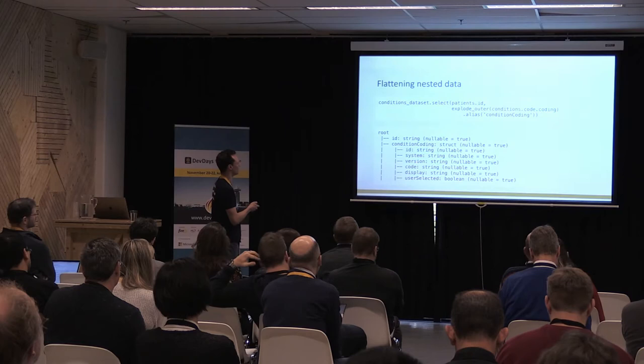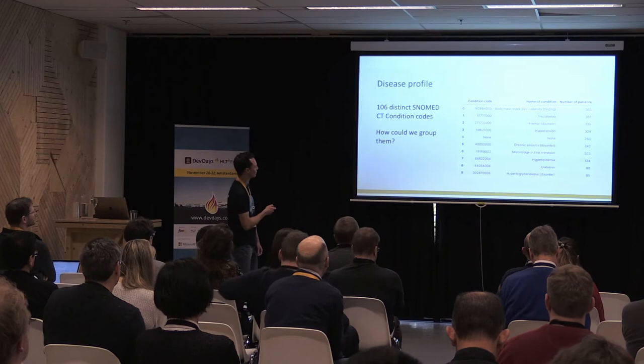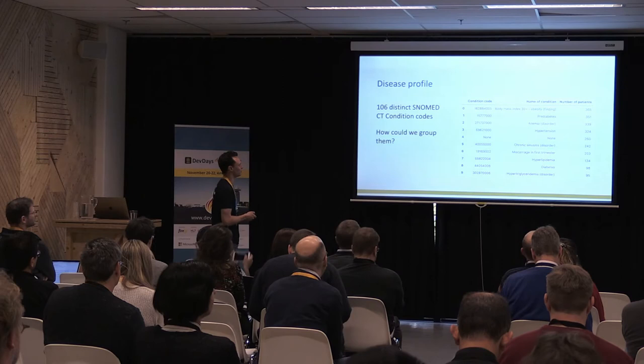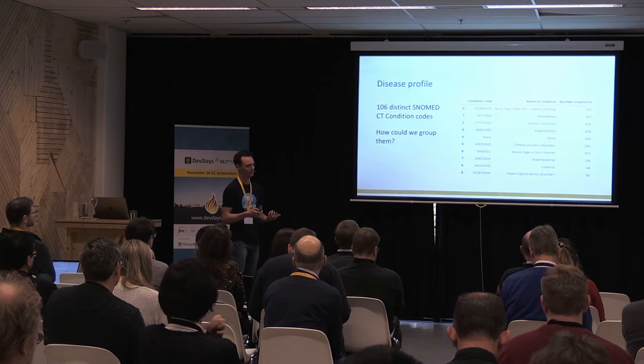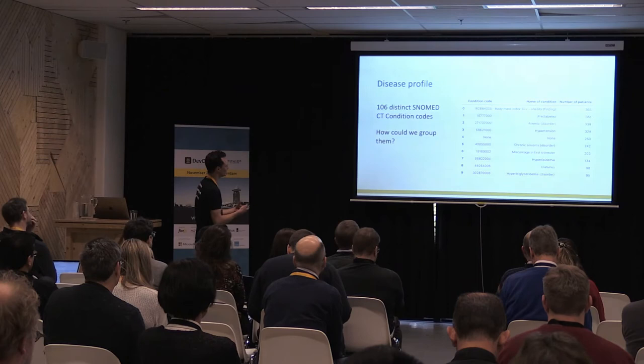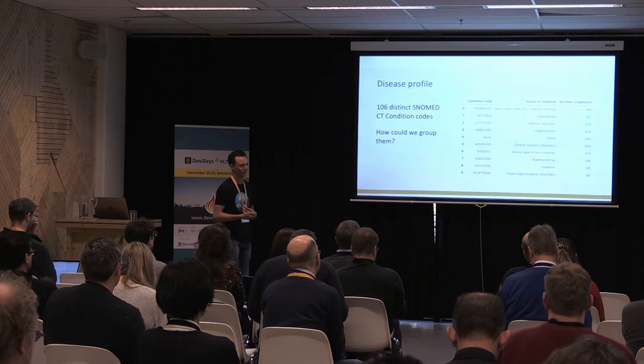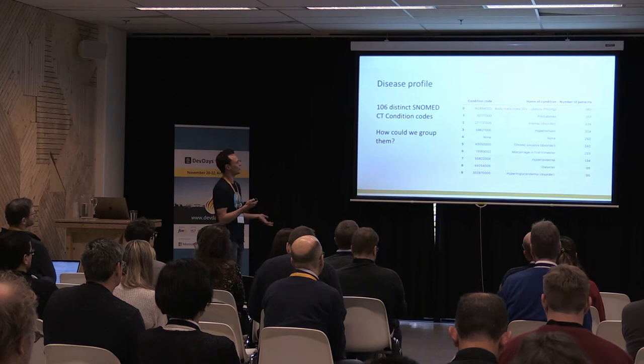Now that we can access our codes, we can create a table showing the top 10 conditions by number of patients — keeping in mind these overlap, so a patient can have more than one. We've determined there are 106 distinct SNOMED CT condition codes in our dataset. Now what do we do with it?